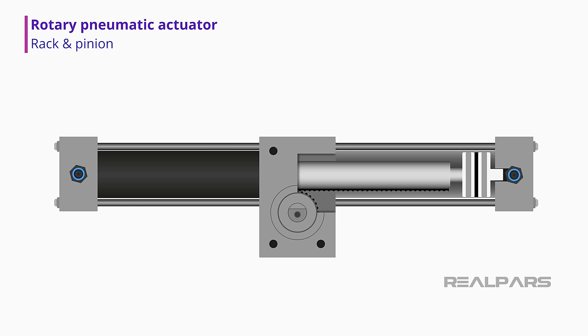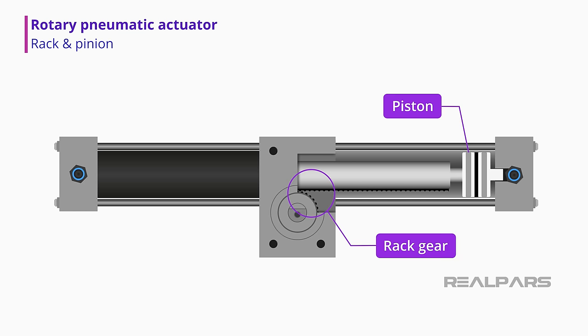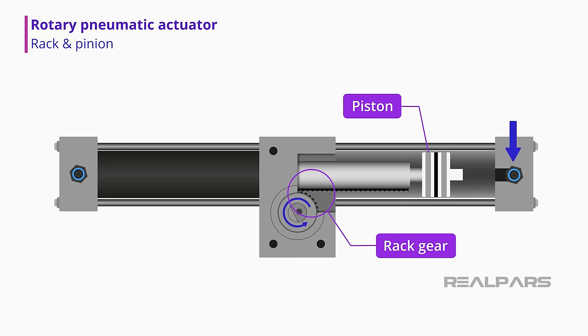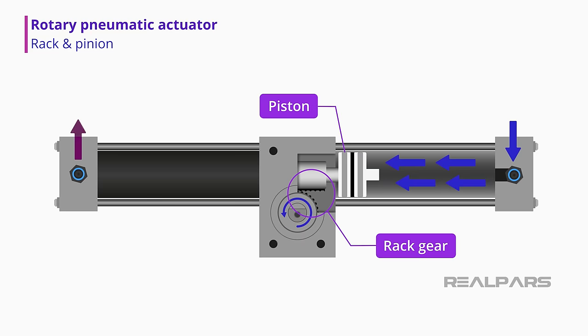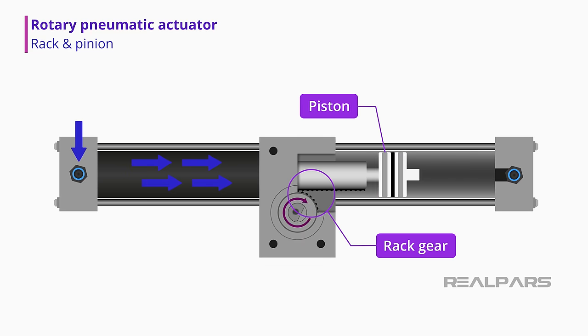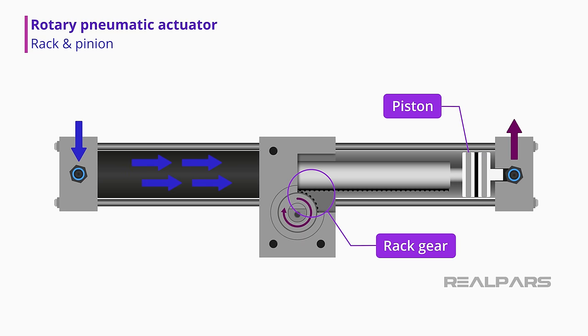Rack and pinion actuators use a piston attached to a rack gear. When pneumatic pressure is applied, the piston and rack move linearly, rotating the pinion gear and drive shaft.